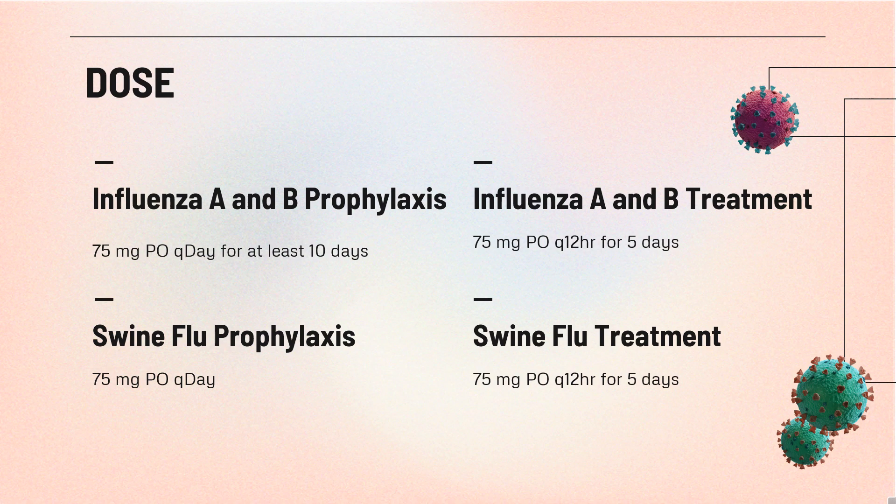Dosing: For influenza A and B prophylaxis — 75 mg orally once daily for at least 10 days. Initiate within 48 hours of exposure; for a community outbreak, may administer for up to 6 weeks. For influenza A and B treatment — 75 mg orally every 12 hours for 5 days. Initiate within 48 hours of influenza symptom onset.